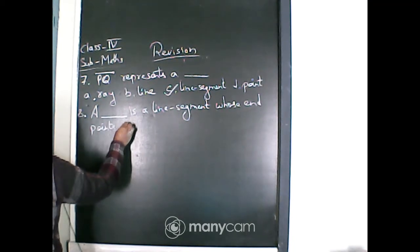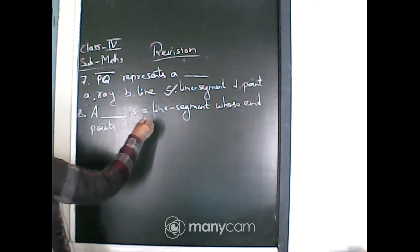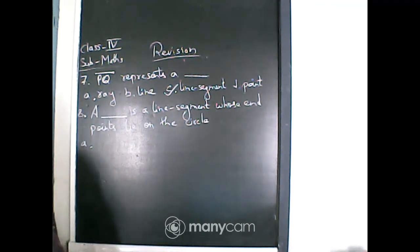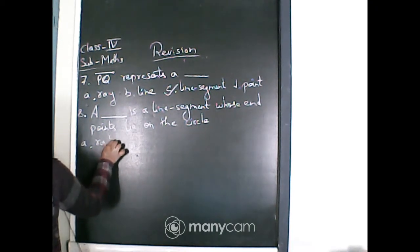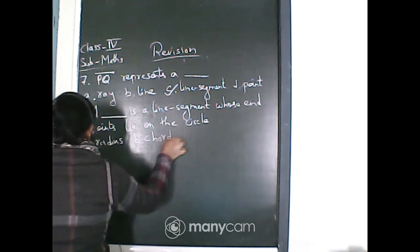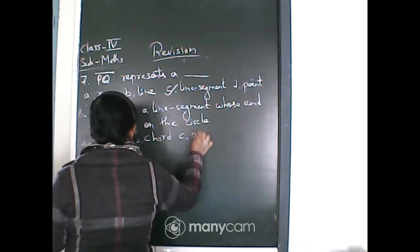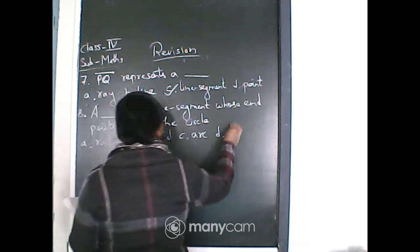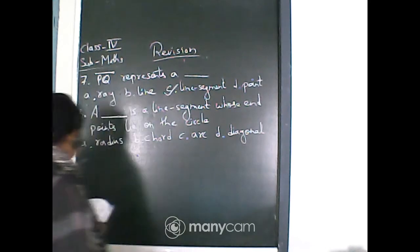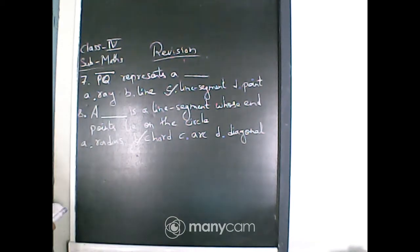A dash is a line segment whose end points lie on a circle. The options are radius, chord, arc and diagonal. The answer is option B — chord — because for a chord, both end points lie on the circle.